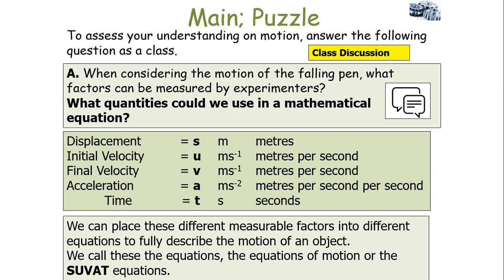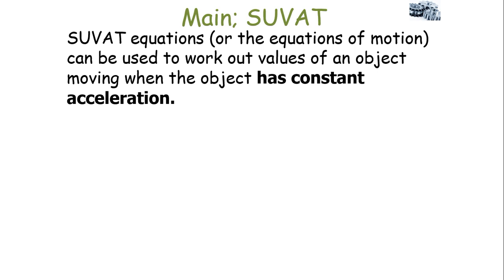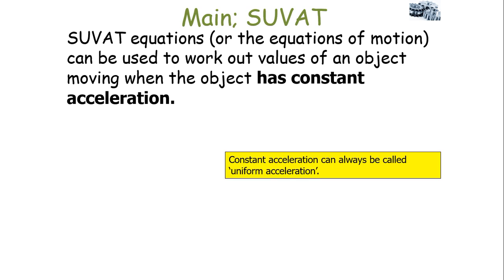We can place these measurable factors into different equations to fully describe the motion of an object. We call these the equations of motion or the SUVAT equations, from what the symbols spell out. The SUVAT equations can be used to work out the values of an object's movement when it has constant acceleration, also called uniform acceleration.